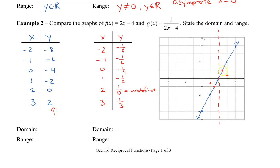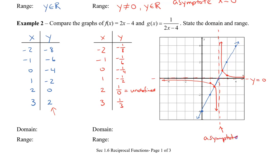Having these two points, I can graph something on the right side, and then connect the other two points to get the left side. Same as before, I have a horizontal asymptote at y equals 0 because as x gets larger and we take the reciprocal, we're never going to actually reach 0. This time, we have a vertical asymptote at x equals 2.